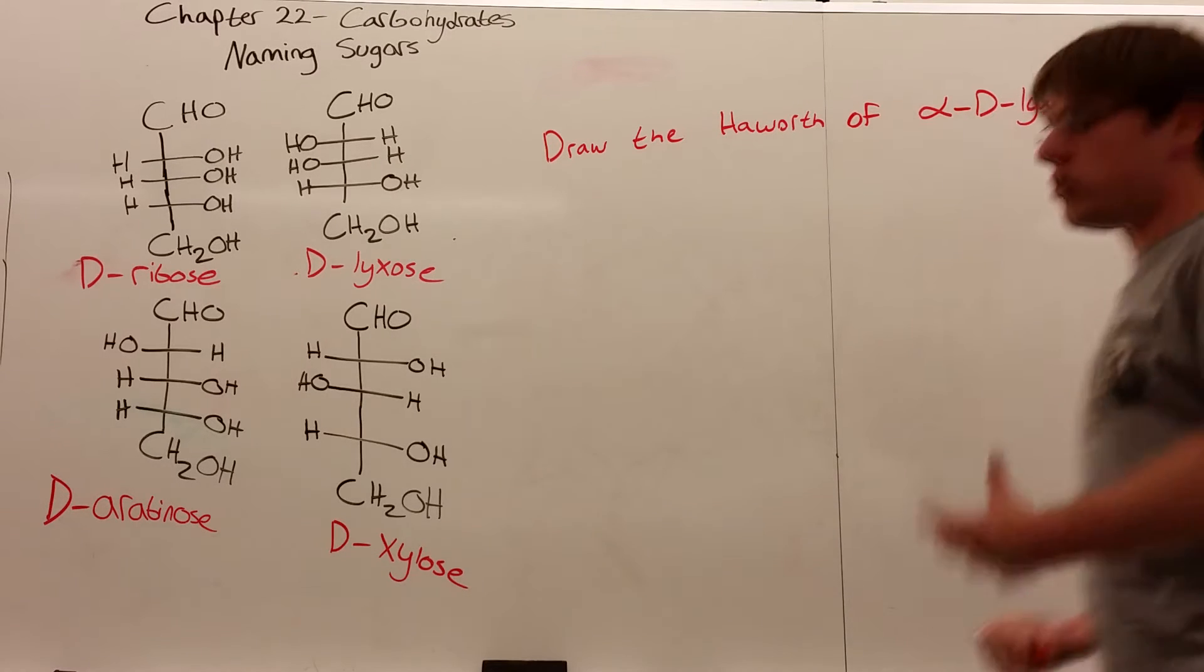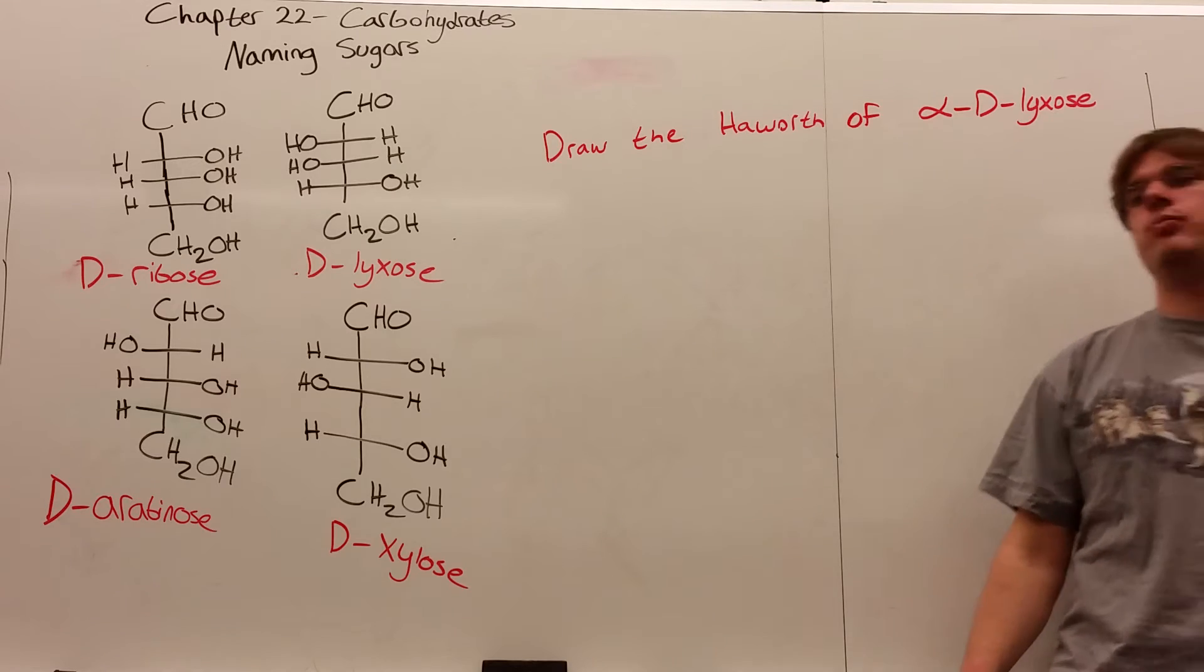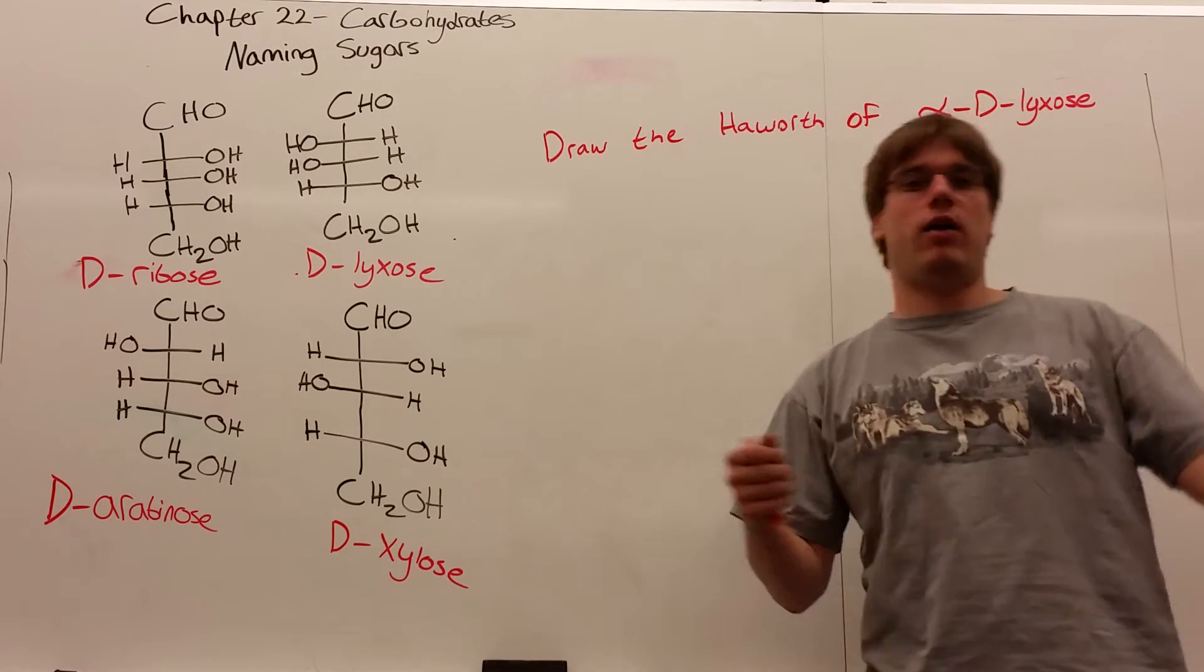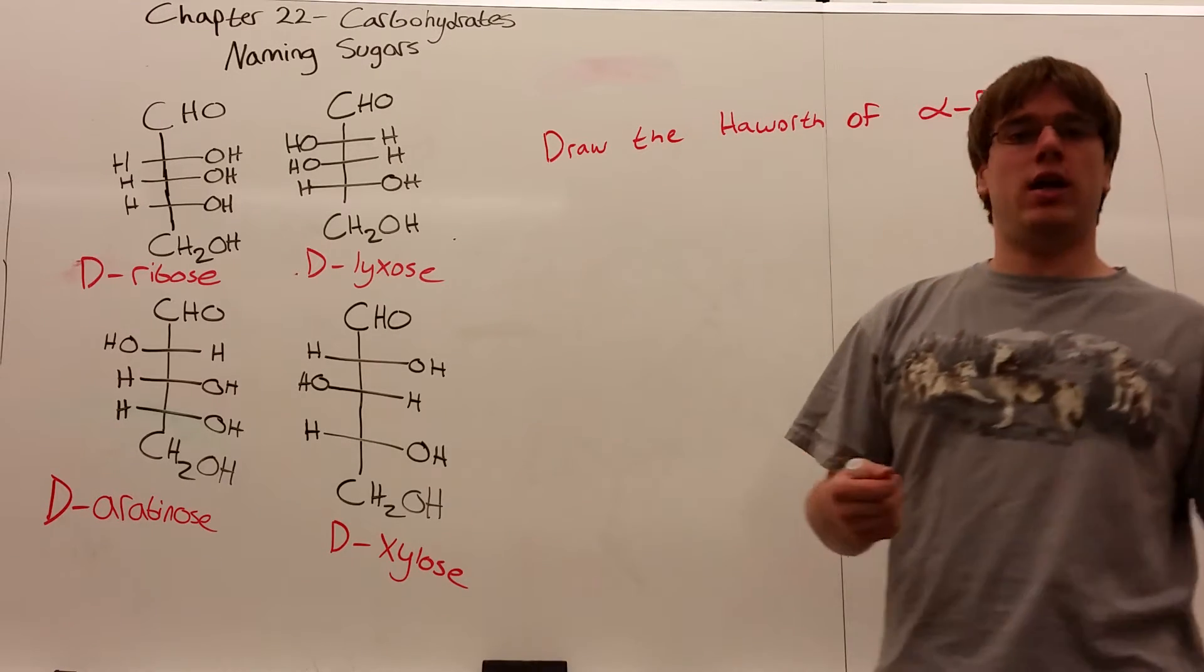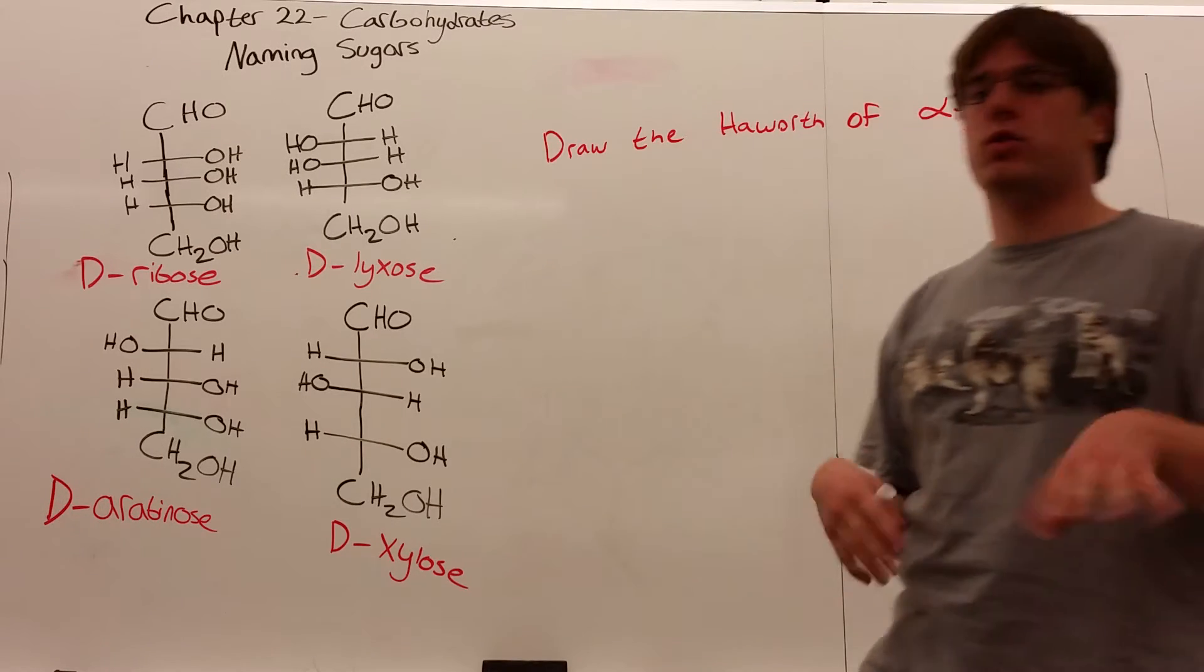The next thing they often ask about is how to name a sugar. You're going to hear things like alpha and beta, D and L, and those are the most common parts of the question.